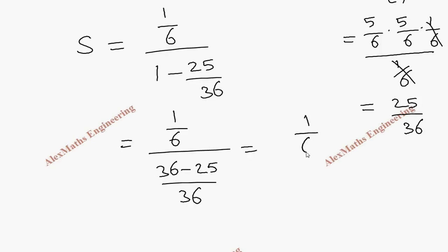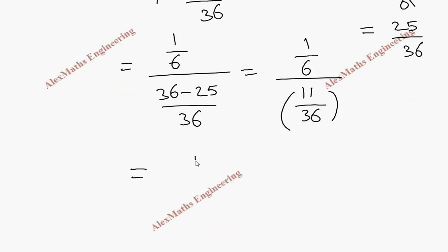So 1 by 6 divided by 11 by 36. This we can take as a product in the numerator, that is 36 by 11. After canceling this, the final answer is P of A winning is 6 by 11.